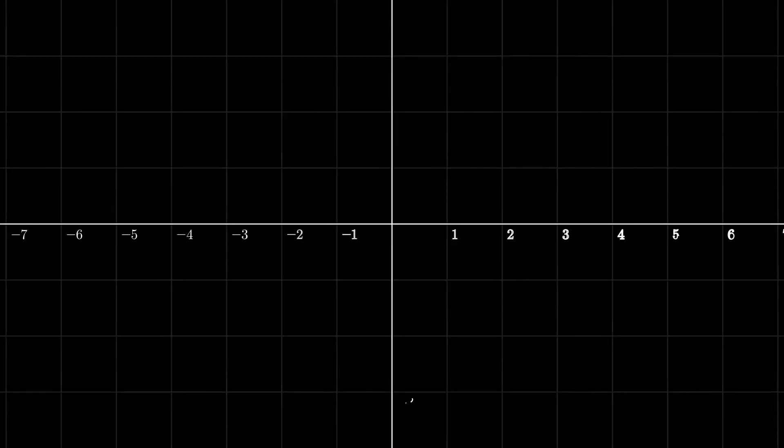We can think of a complex number as a vector, where we have the real axis on the horizontal and the imaginary axis on the vertical. This allows us to graph our complex numbers.